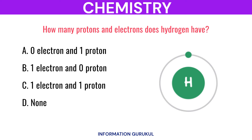How many protons and electrons does hydrogen have? One electron and one proton.